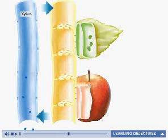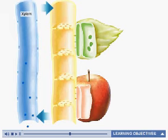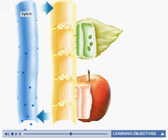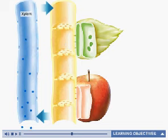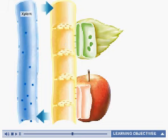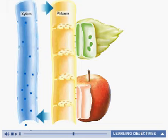Plants transport sugars in a specialized tissue called phloem. Unlike the conducting cells in xylem, phloem cells are alive. Roots, stems, and leaves all contain phloem and play specific roles in the movement of sugar through the plant.